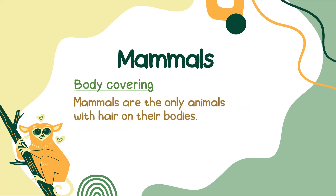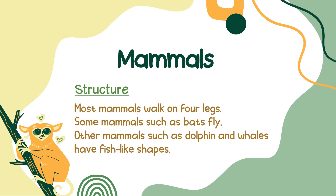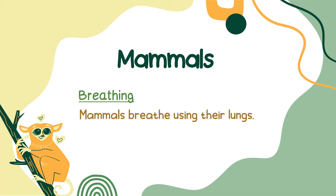Mammals are the only animals with hair on their bodies. Most mammals walk on four legs. Some mammals, such as bats, fly. Other mammals, such as dolphins and whales, have fish-like shapes. Mammals breathe using their lungs.